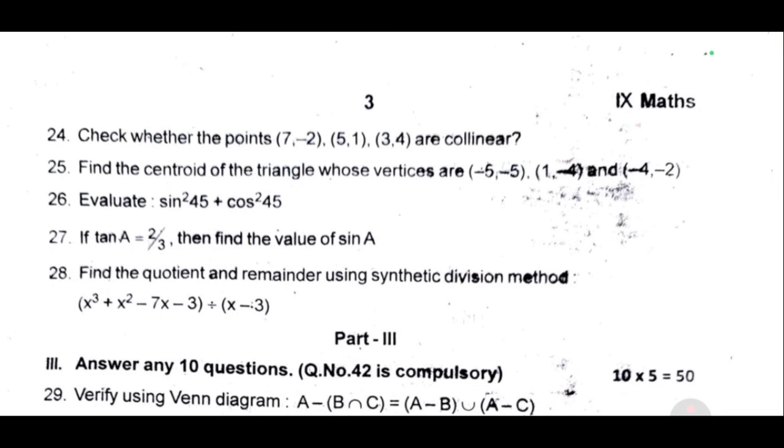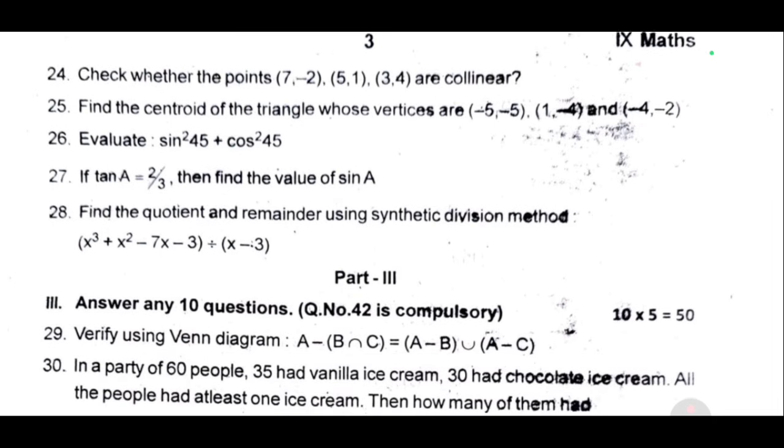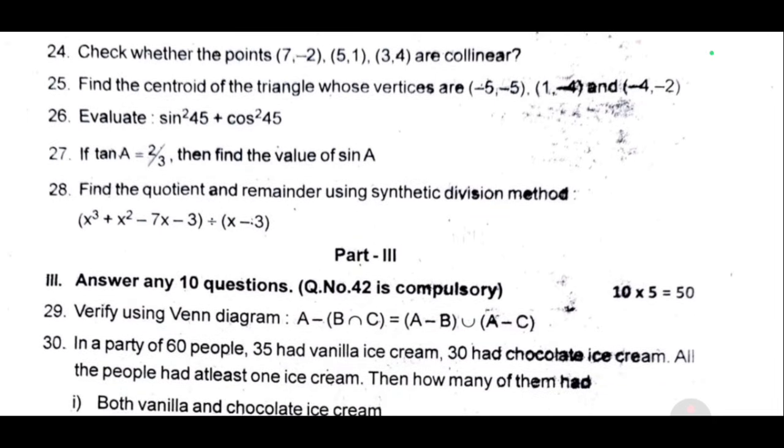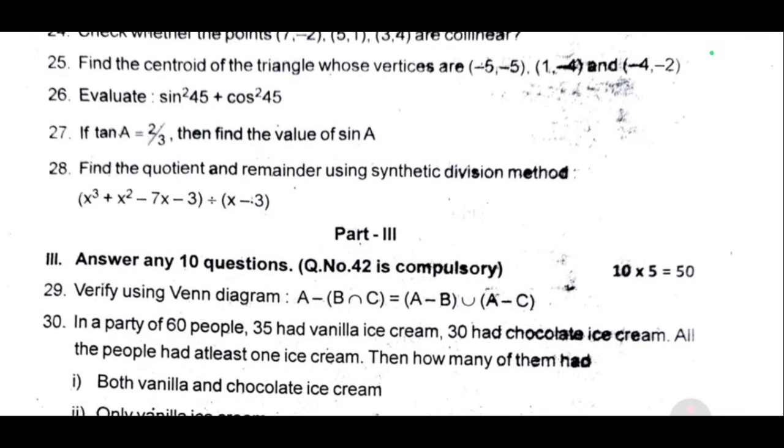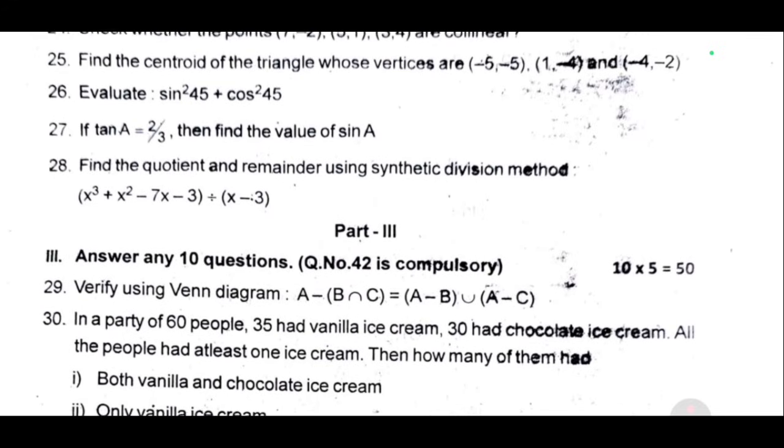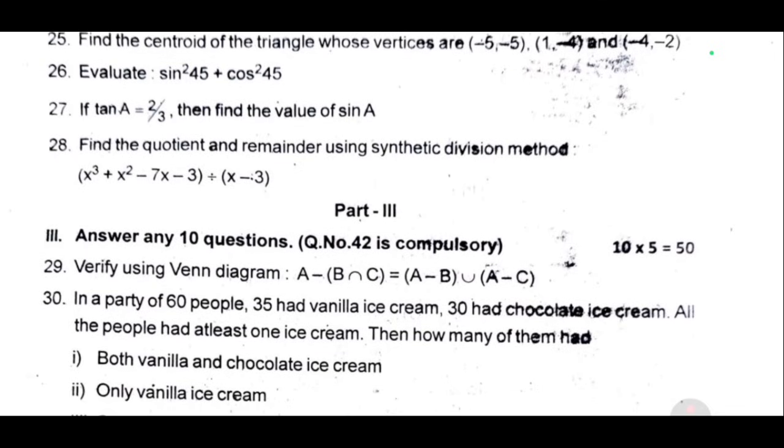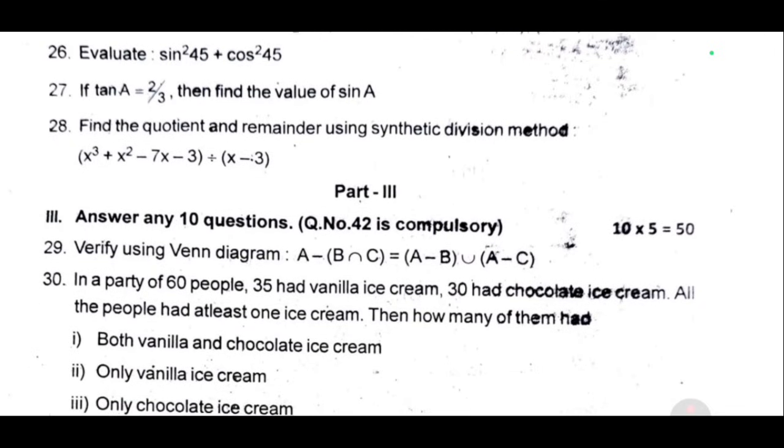Question 42 is compulsory. The question is compulsory and you will have 2 marks deducted. 29, verify using Venn diagram, A minus B intersection C equal to A minus B union A minus C.